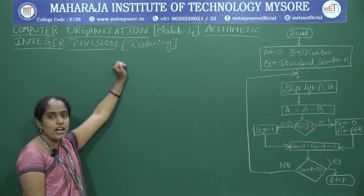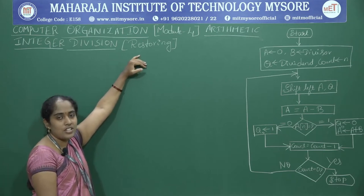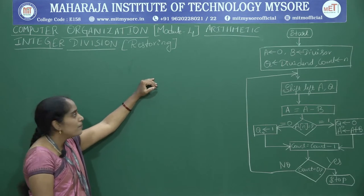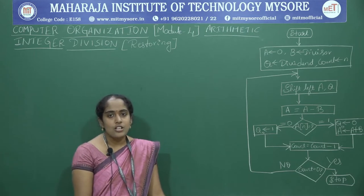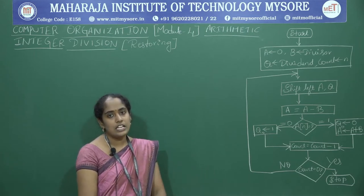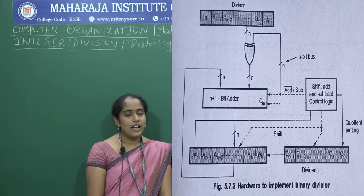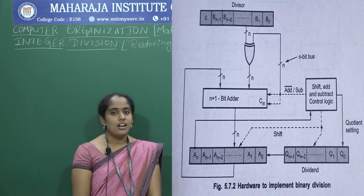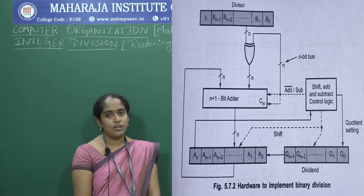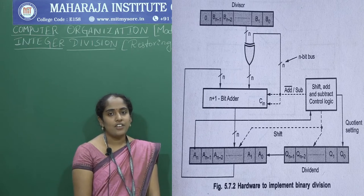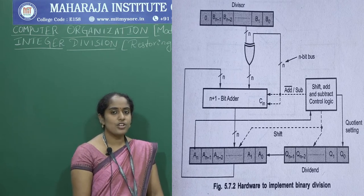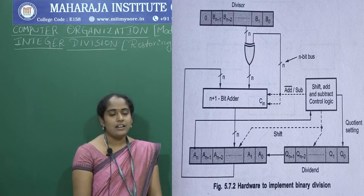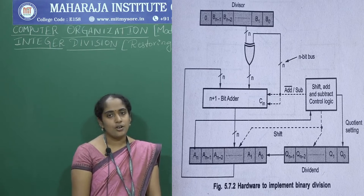In integer division, we have two types: restoring division and non-restoring division. The division is more complex than multiplication. This is the hardware implementation of integer division. In that, we have four important registers: A, B, Q, and N. We have shift and subtract control logic, which is used to shift the value in the register and set the quotient value.